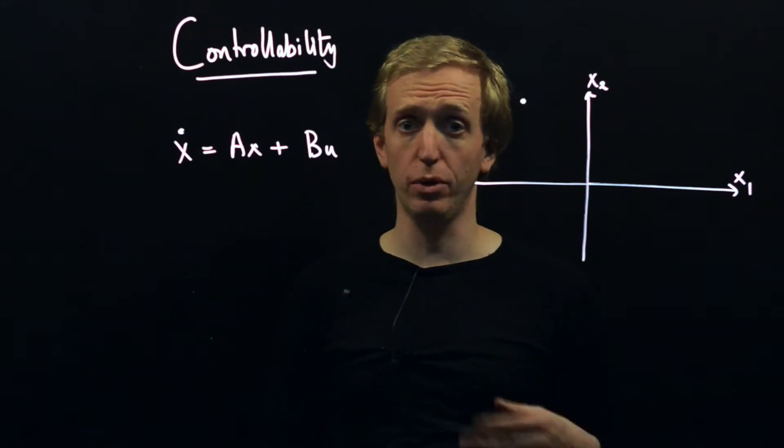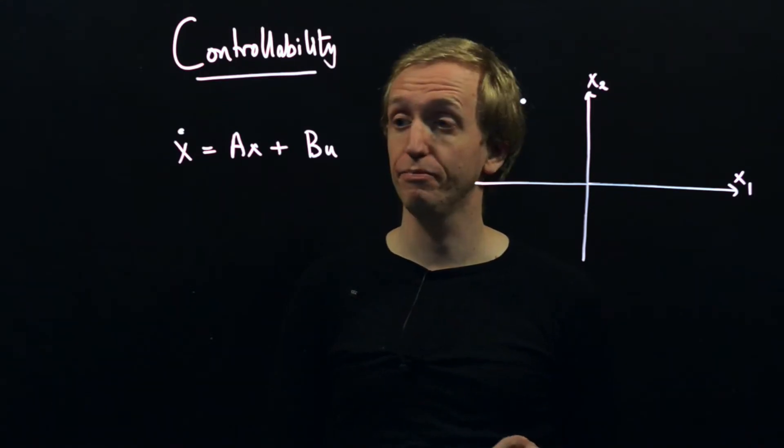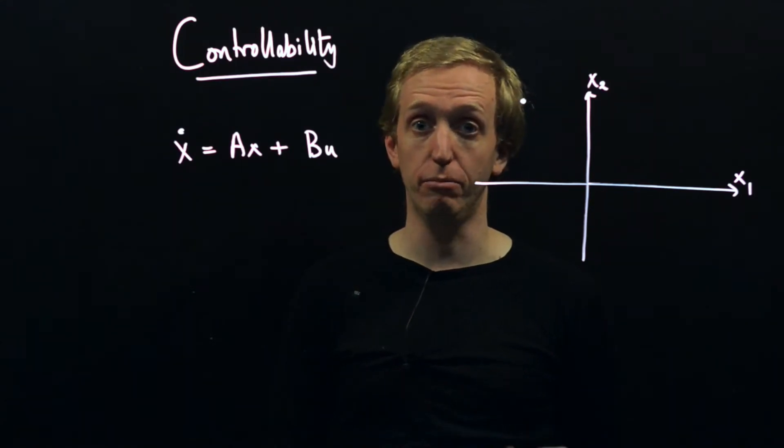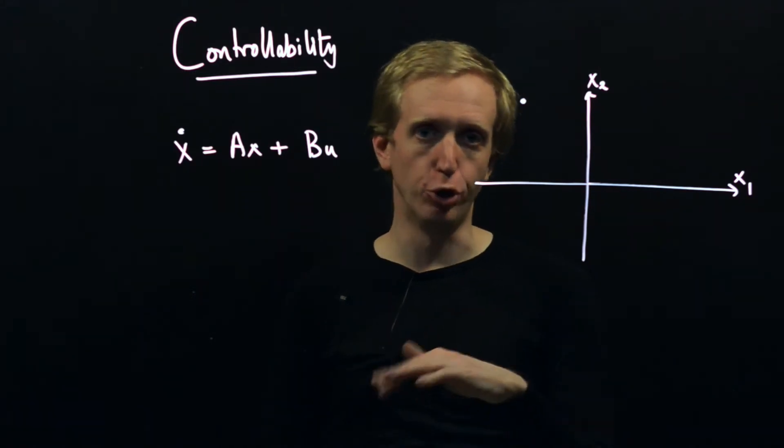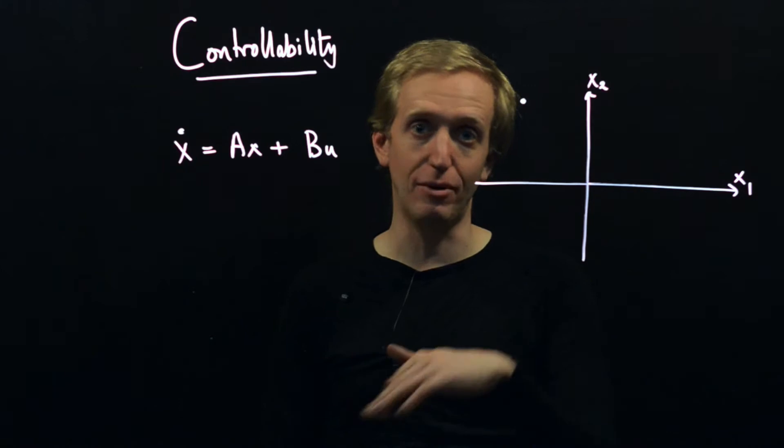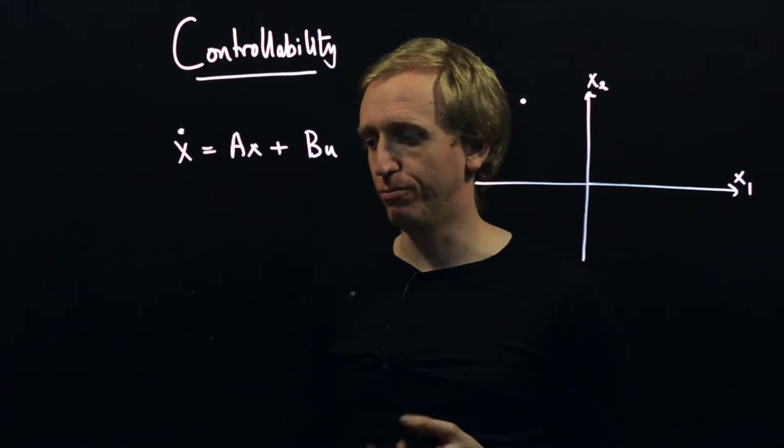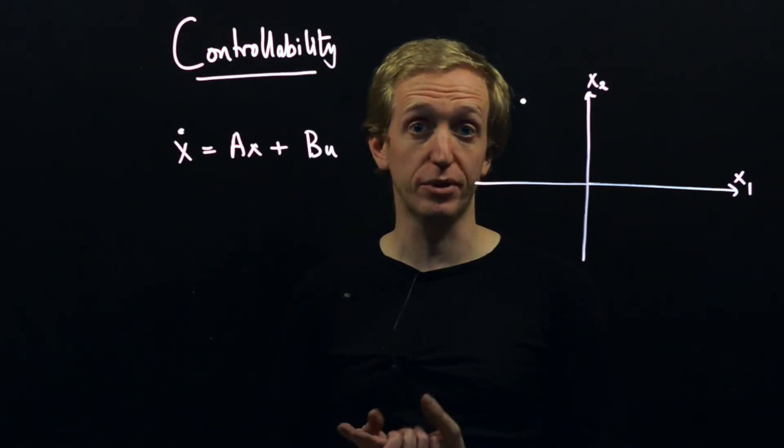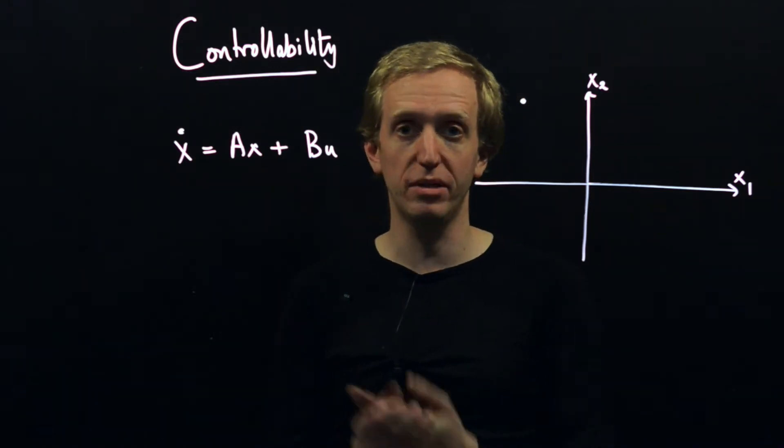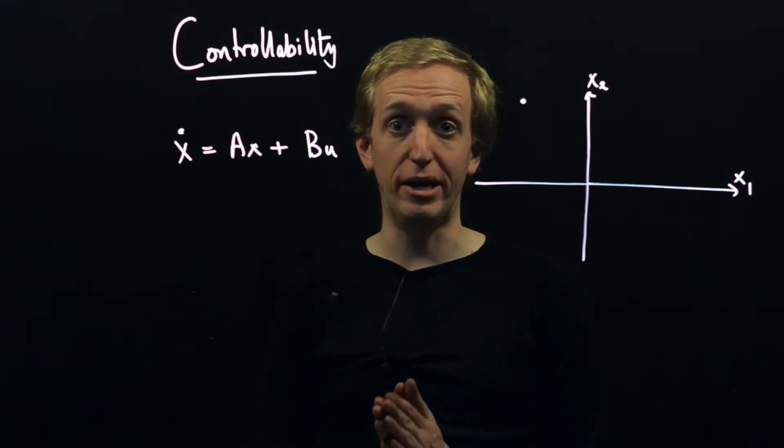In particular, controllability is all about trying to understand what we're able to achieve with our control input u, and in particular how we're able to push the value of our state around the state space. The value of your state at any particular point in time is giving you some snapshot as to the current configuration of your system.